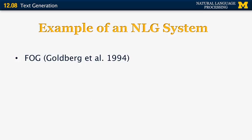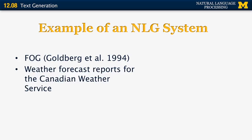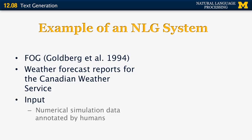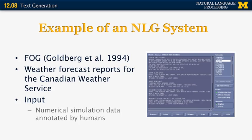Here's an example of an NLG system. This is the FUG system designed by Goldberg et al., which has been in use for more than 20 years. It is designed to generate weather forecast reports for the Canadian Weather Service in both French and English. Its input is some numerical simulation data annotated by humans, for example about fronts and expected precipitation. Its output is an actual weather report for a specific location in one of the two target languages.